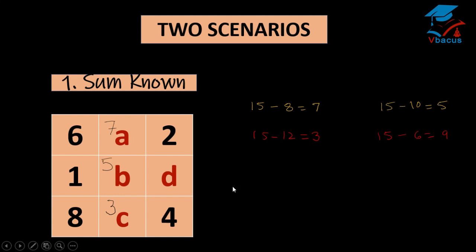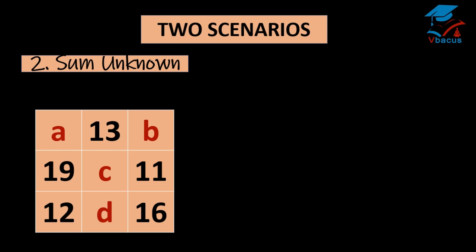So we can check diagonally, column wise and row wise. So row wise, 6 plus 7 plus 2 is 15. Column wise, 9 plus 2, 11 plus 4, 15. And diagonally also we can check 6 plus 5 plus 4, that is 15. Let us go to next puzzle.